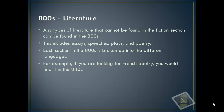The 800s cover different types of literature that can't be found in the fiction section. This includes essays, speeches, plays, and poetry. For elementary school, it would probably be more plays and poetry, but in the public library you would find essays, speeches, and all kinds of other things. The 800s are also broken up into different languages — for example, French poetry would be in the 840s, German poetry in another section, and Italian poetry in yet another section of the 800s.